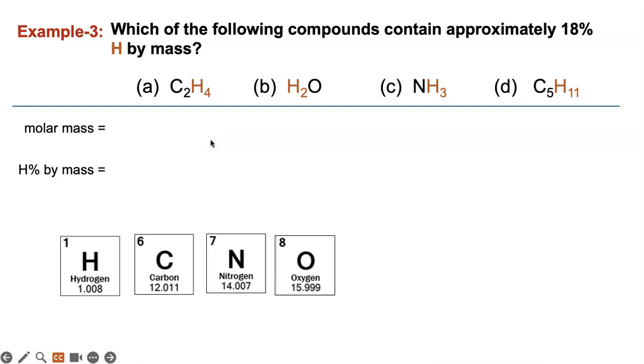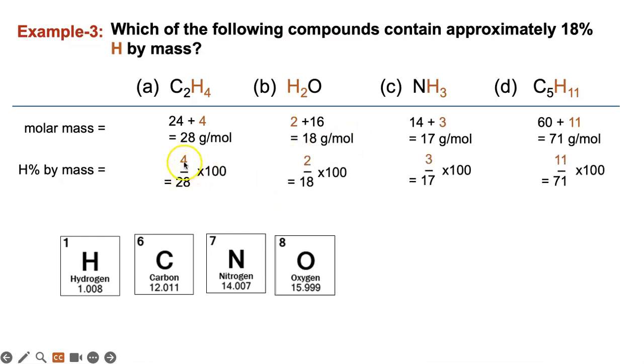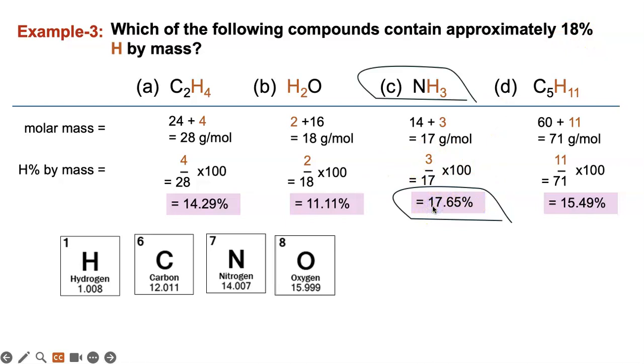Here's the molar mass calculation for each one. This is carbon times 2 is 24, this is 1 times 2 plus 16. This one is 4 because 1 times 4 is 4. This is 14 and 3 times 1. This is 12 times 5 is 60 and 1 times 11 is 11. When you add them up you get these values, that is the molar mass. Then you divide the molar mass by hydrogen, shown in brown, and you should get these values. So which one is close to 18? It's this guy, ammonia. So it's ammonia who has 18% hydrogen by mass.